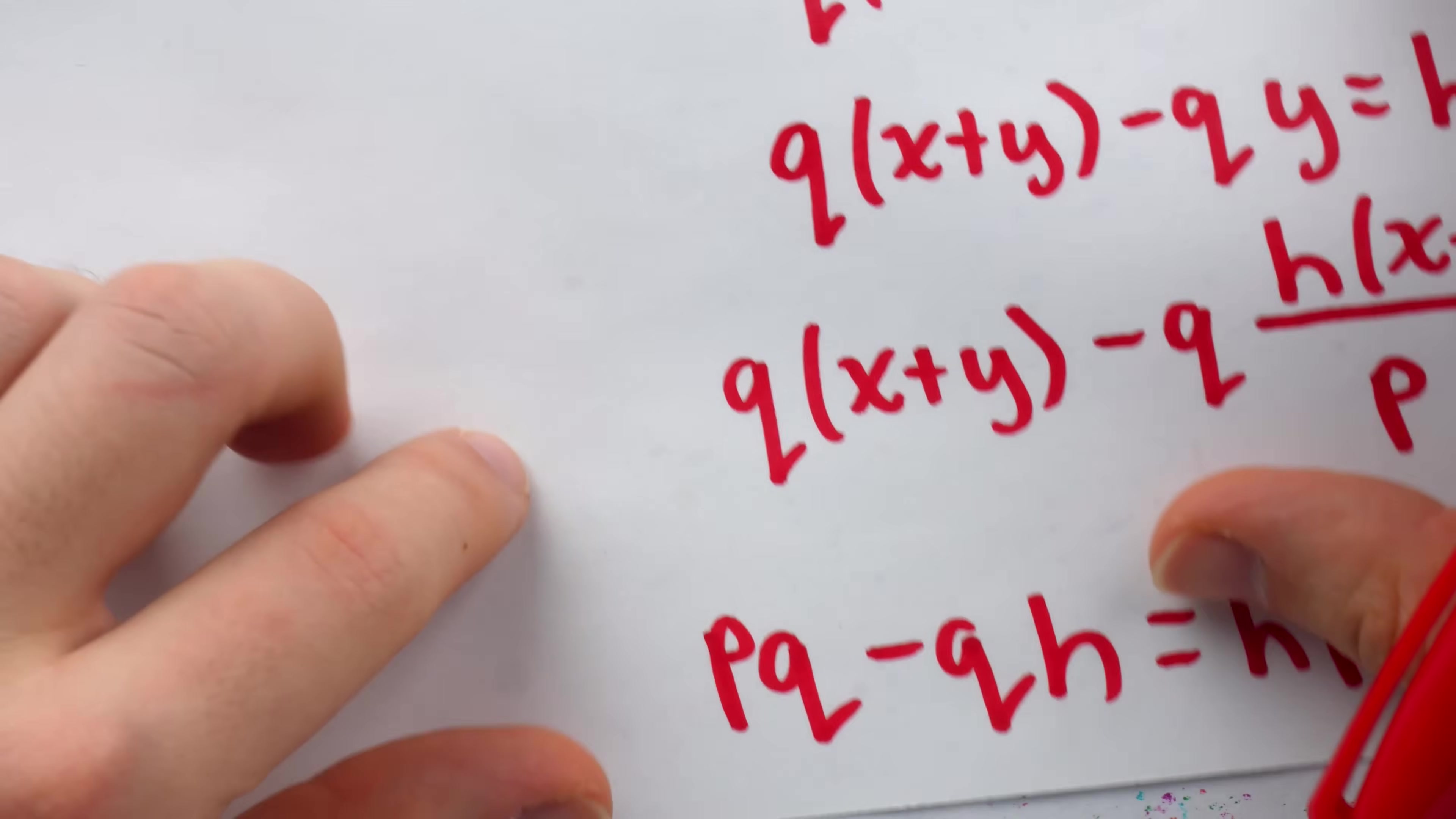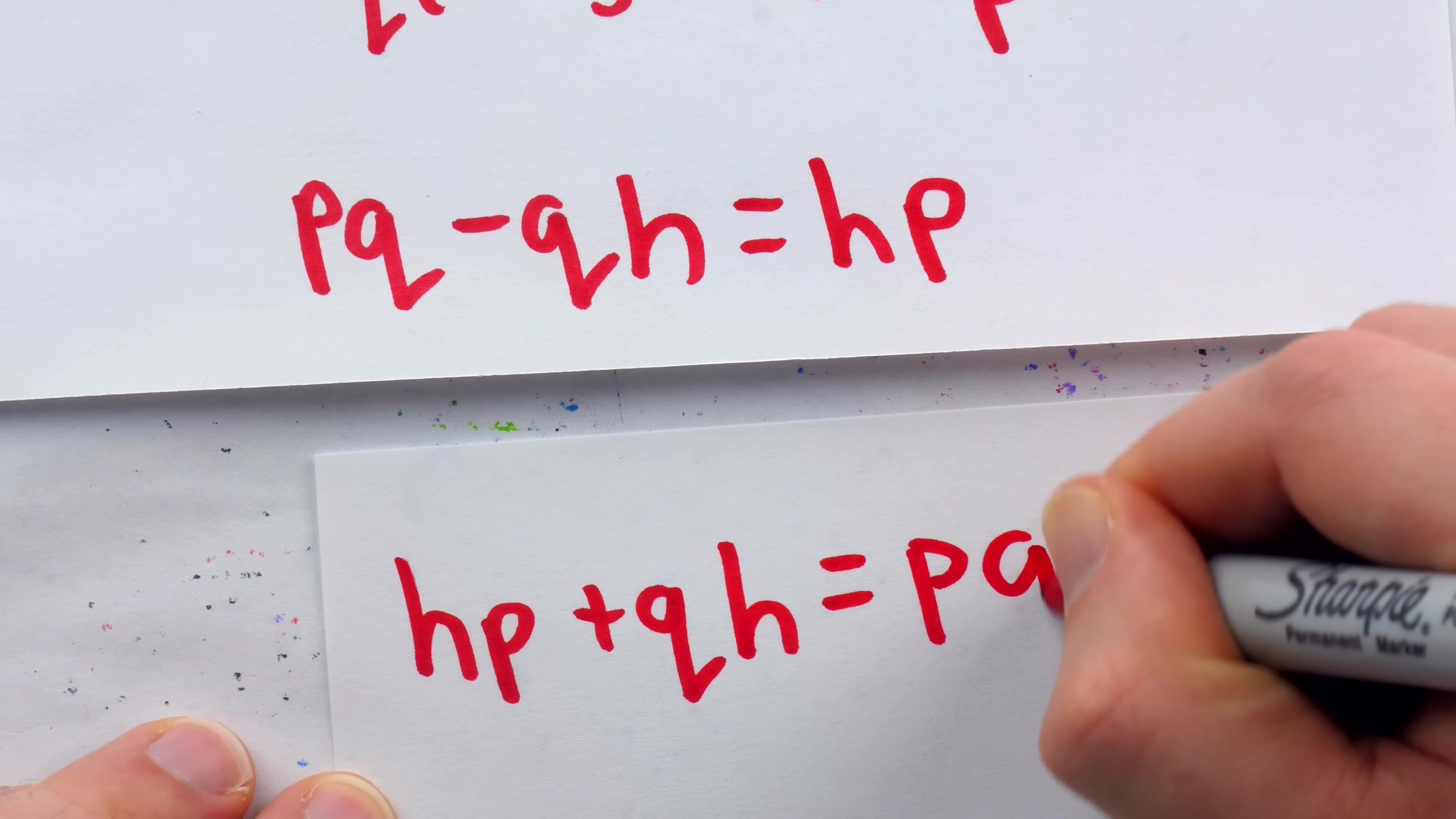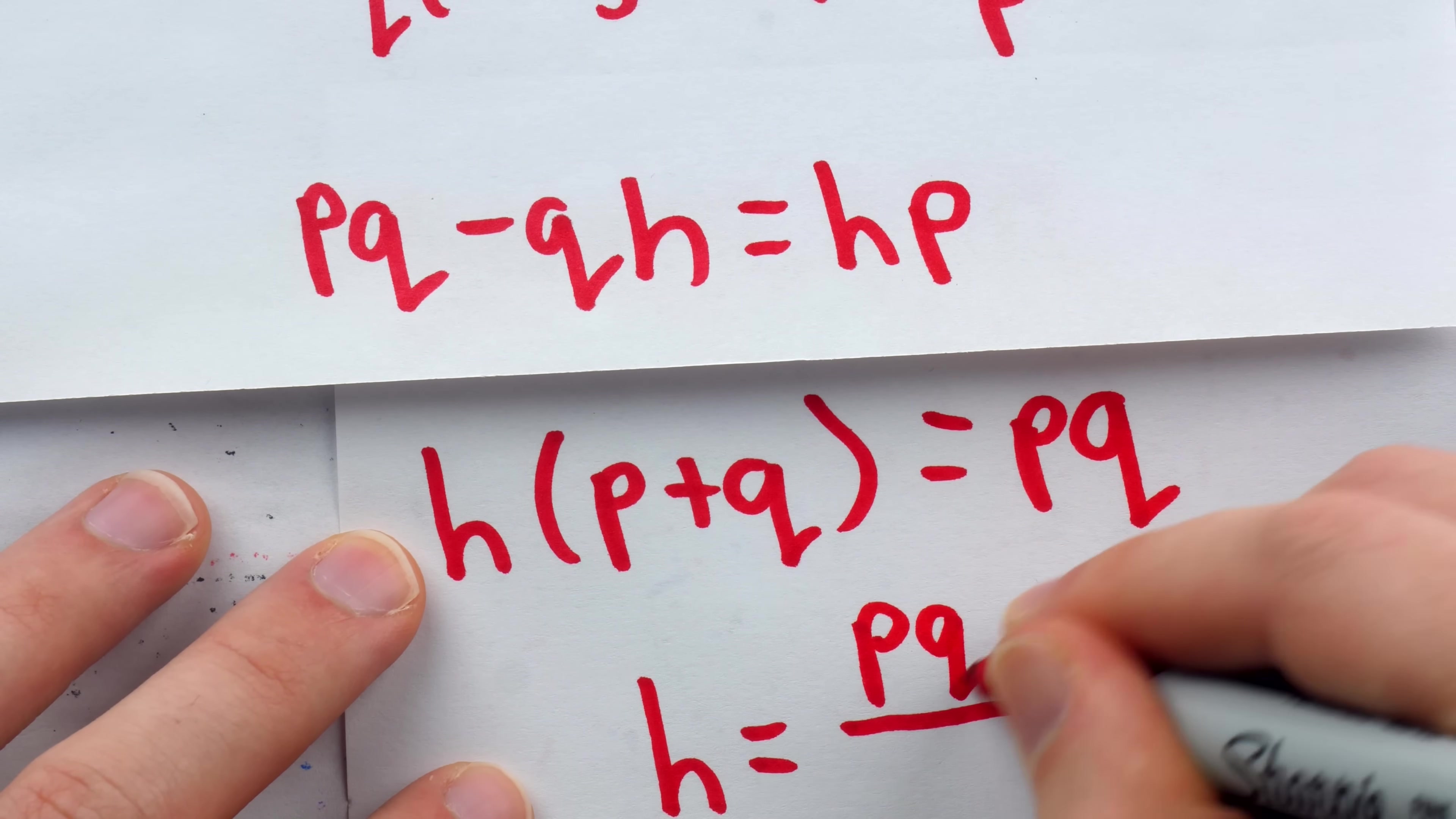Now, remember, we're trying to get H by itself to figure out the height of this string. So let's add QH to both sides of this equation. And then we can factor an H out of those two H terms. So we would have HP plus QH equals P times Q. Then we simply factor an H out of these two terms to have H times P plus Q equals PQ. And finally, divide both sides by P plus Q to arrive at our answer H equals PQ divided by P plus Q.